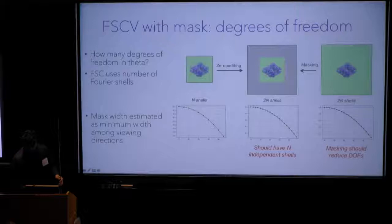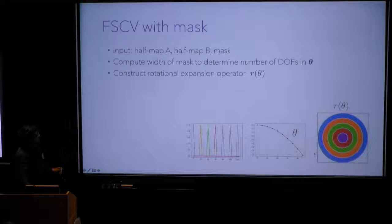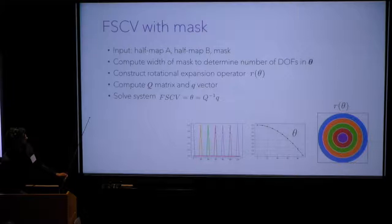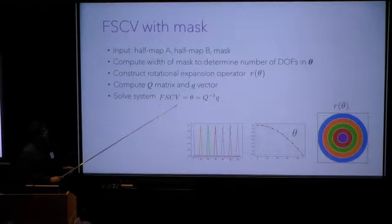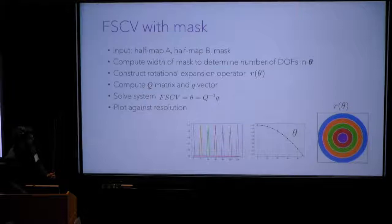All these pieces together allow us to define the FSCV operation entirely: take the two half-maps and a mask, compute the width of the mask to determine the number of degrees of freedom in theta, use those to define the 1D filter and the rotational expansion operator R(theta), compute the capital Q matrix and little q vector, and solve the linear system. The solution can also be computed with constraints — for example, bounding the optimal filter between 0 and 1, since negative filtering doesn't make sense.